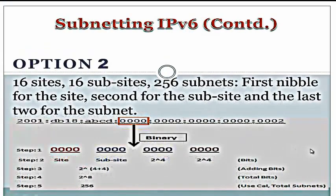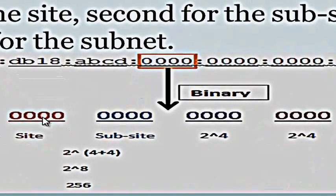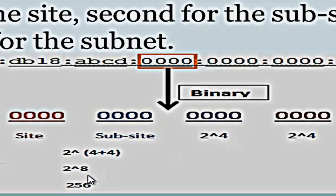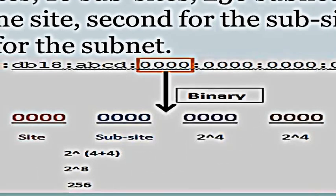Now let's go to option 2: 16 sites, 16 sub-sites, and 256 subnets. The first nibble is for the site, the second nibble for the sub-site, and the last two nibbles for the subnet. That means we have 2 to the power of 4 bits and 2 to the power of 4 bits. If we add these two together, we get 2 to the power of 8 bits. That means all together we get 256 total subnets.